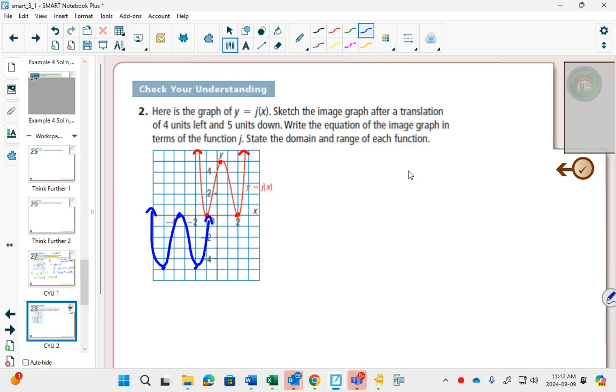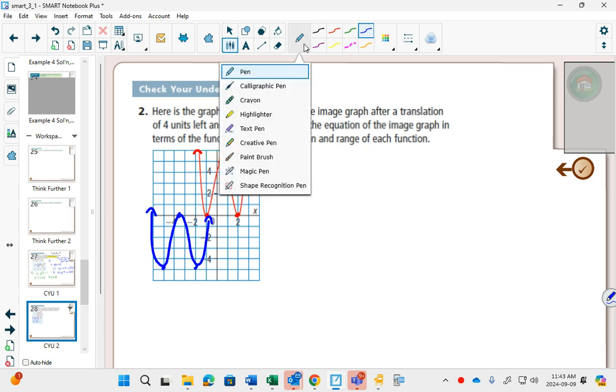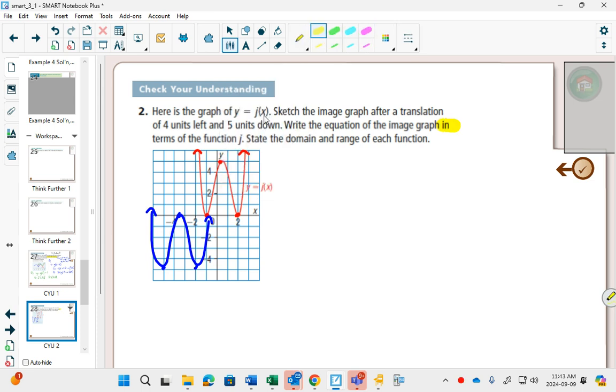So I reread my question, because I just actually, I didn't even read the whole question. I got so excited about the first sentence that I wanted to do the question, that I just started doing the question without reading the rest. I need to write the equation, and again, we have this language here, in terms of the function j.